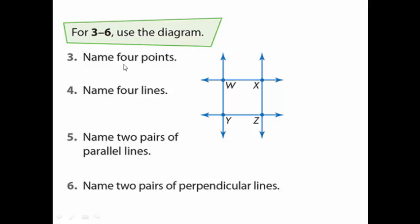Here we have four points. Where are the four points? We have point W, point X, point Y, and point Z. Now for four lines — you already have four lines in the diagram.